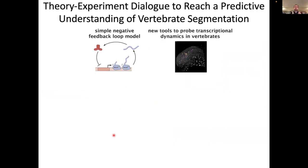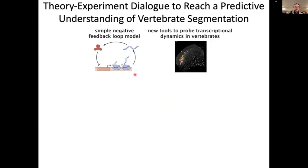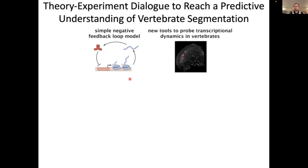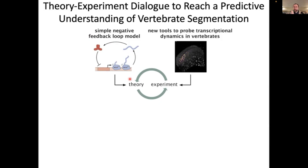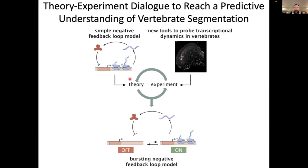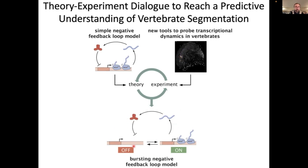Let me just take a step back. I started talking to you about this challenge of reaching a predictive understanding of developmental decision-making, and more specifically, can I use these regulatory diagrams in order to predict the dynamics of developmental processes in space and time? We started with a simple theoretical model, developed tools to engage in the theory-experiment dialogue, and what we learned is that the simple model was wrong or insufficient — you need to account for this bursting phenomenology. And if you do, and if you include feedback, you can explain how these stochastic bursts are organized by repression in order to give you robust oscillations at the protein level.